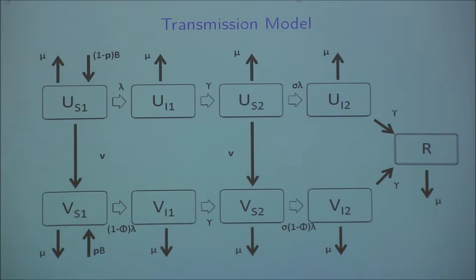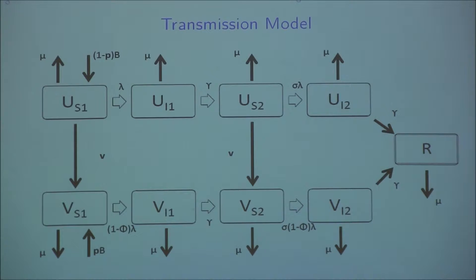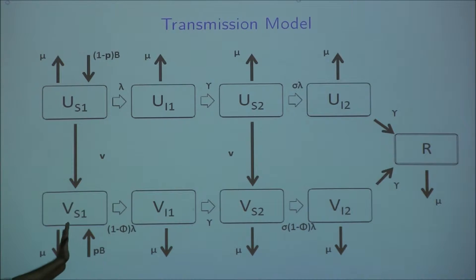B is the birth rate and mu is the natural death rate. Now, how have we incorporated the vaccine in the model? We have two parameters. One of them is we vaccinate a proportion of the newborns: a proportion (1-P) times B go directly into the susceptible class, and the rest, P times B, go to the vaccinated class.